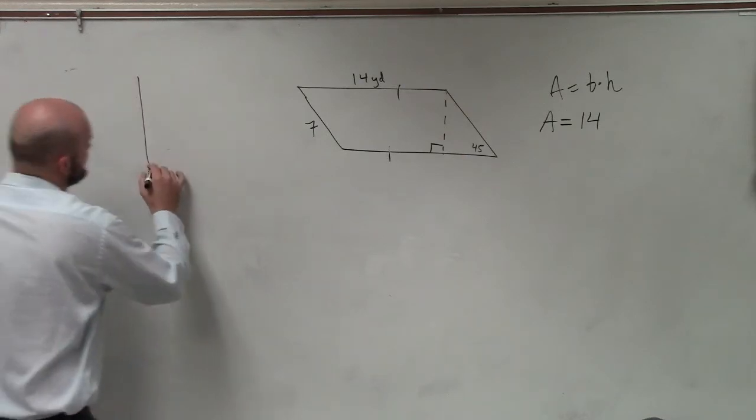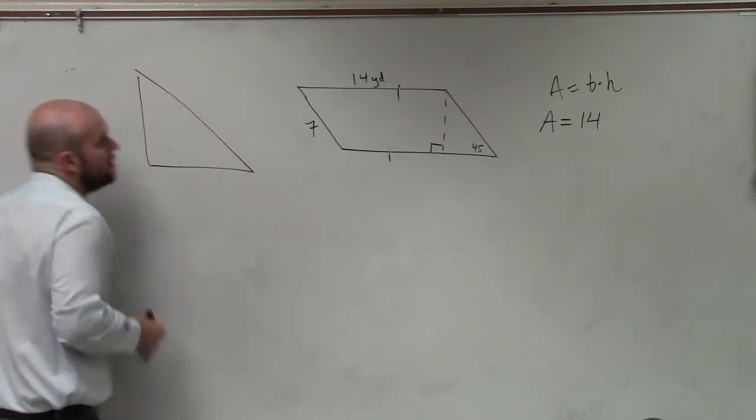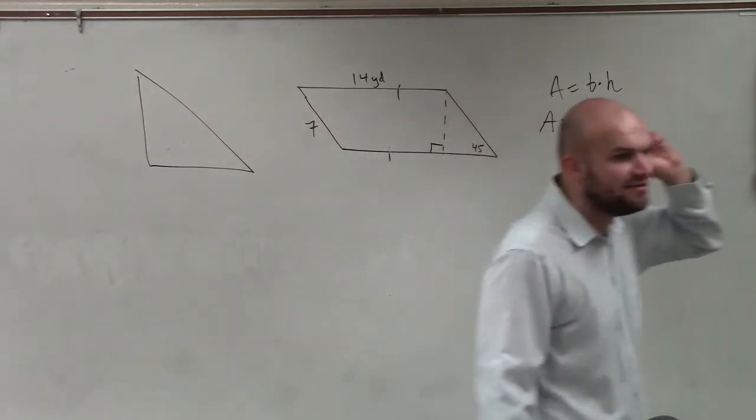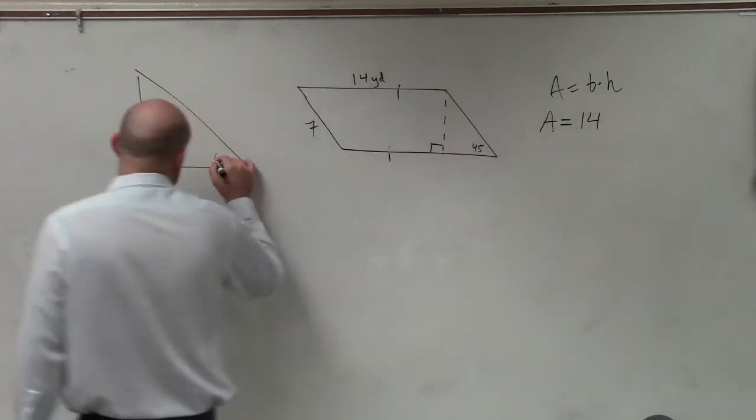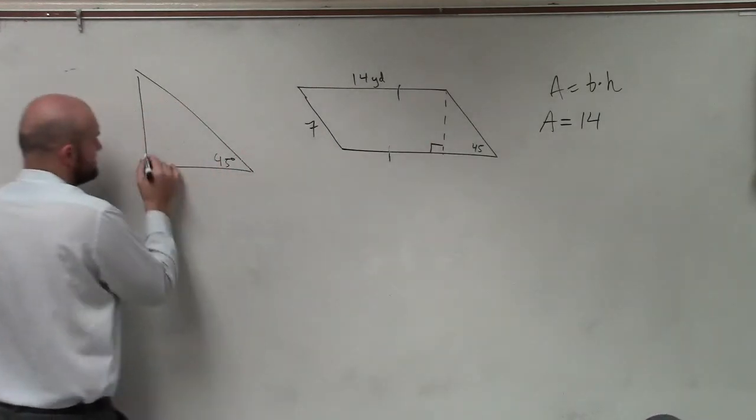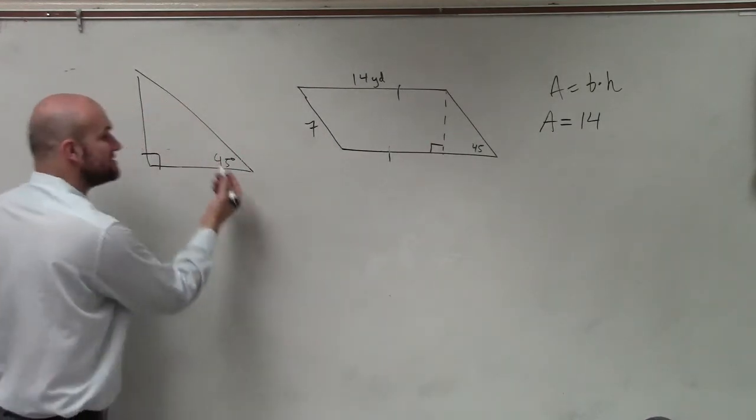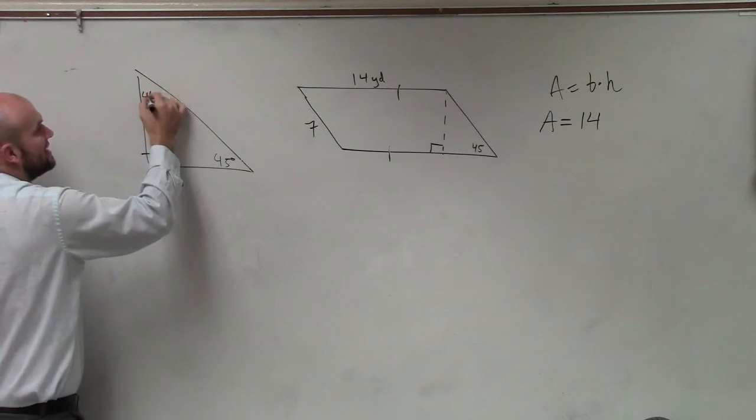Well, what's nice about this is, again, we notice that this is a 45-45-90 triangle, all right? That's 45 degrees. If that's 90, then that has to be 90 in there. And so since that's 45, that's 90, we know that that has to be 45.